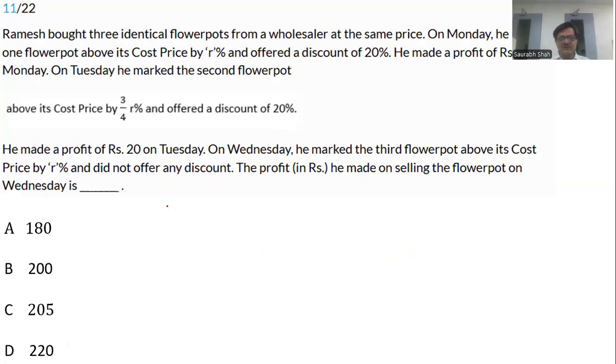Moving on to the next one. Let the cost price be x of all three flowerpots. The first is x raised by r percent. X times 1 plus r becomes the mark price and then there's an 80 percent discount. So this is the selling price. Selling price is x times 0.8 plus 0.8r. Selling price minus the cost price which is x. When you subtract x, we will have x times 0.8r minus 0.2. And this is given to us as 60 rupees profit.